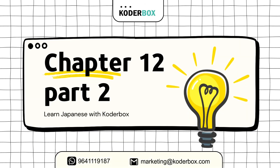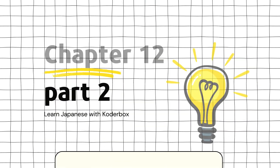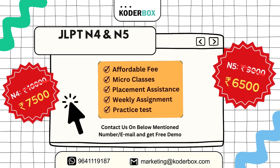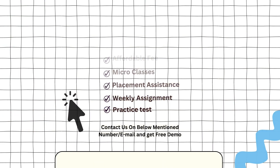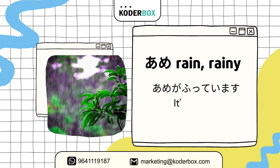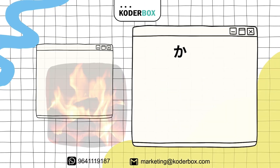Lesson 12 Part 2 Vocab. First: Ame, Rain. Rainy: Ame ga futte imasu. It's raining.